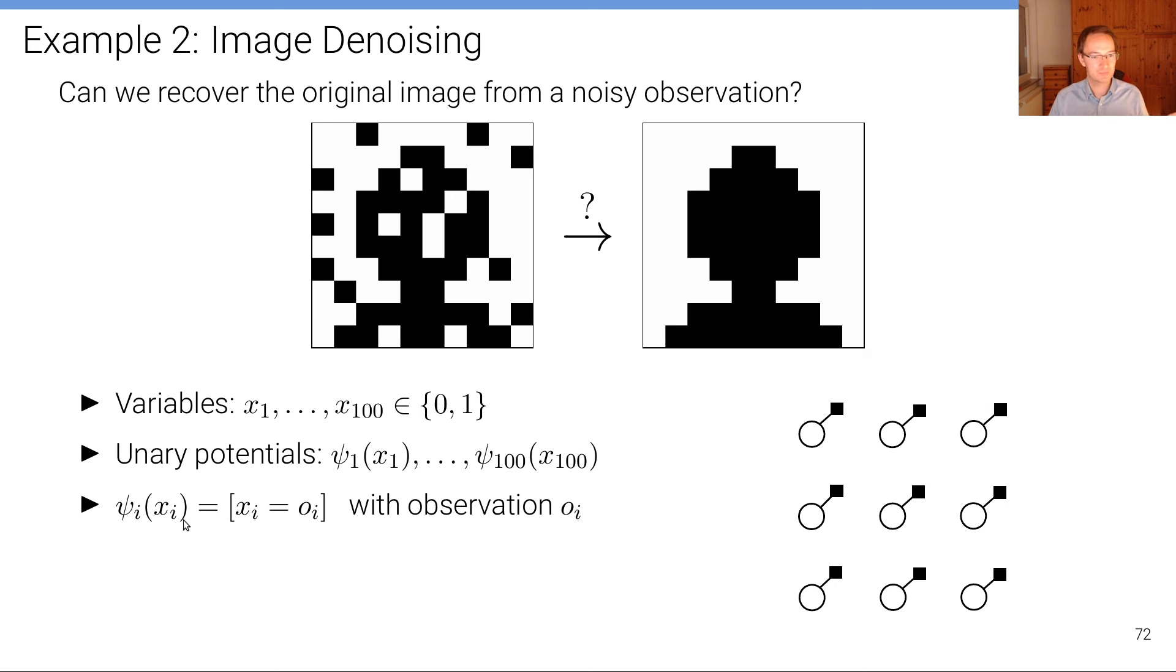We specify these unary potentials such that—this is again the Iverson bracket—this potential is equal to one if the variable takes the value of the observation. So for instance here, if we get a black pixel, that's good. Here, if we get a white pixel, that's good. This is our observation. And we have used here the log representation. So these potentials here are log factors, so the probability distribution is one over Z, the product of these factors equal to one over Z of exp of the sum over these log factors. So we are directly specified in this problem, in contrast to example one here, we directly specified in terms of these log factors, which we of course can do.